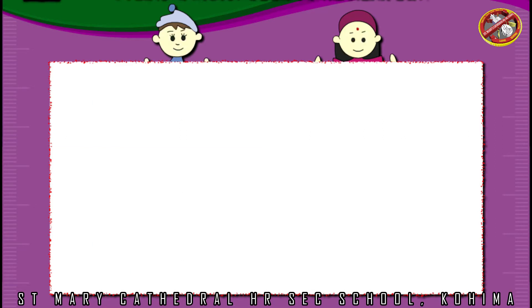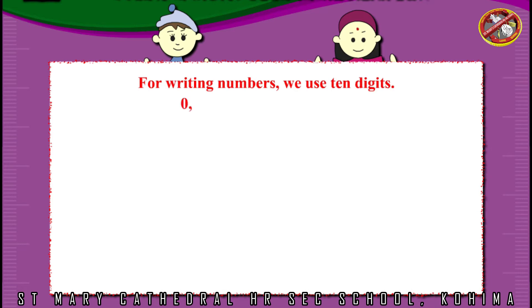Digits used for writing numbers. For writing numbers, we use 10 digits: 0, 1, 2, 3, 4, 5, 6, 7, 8,